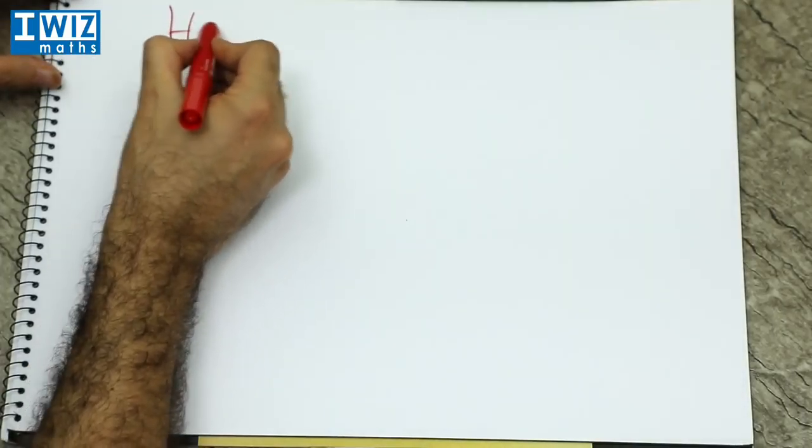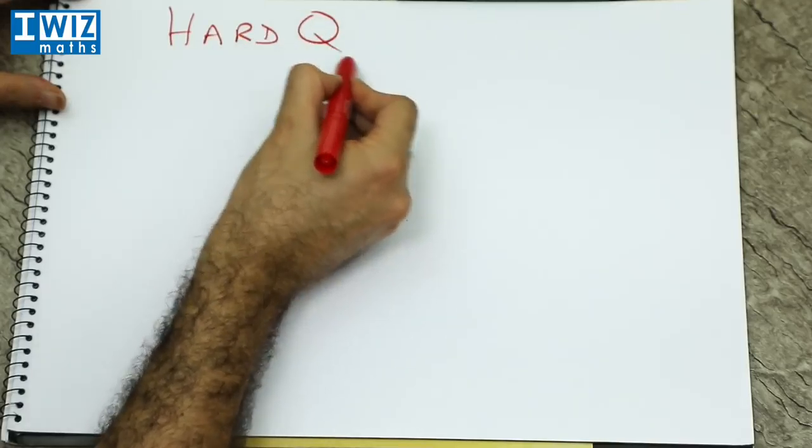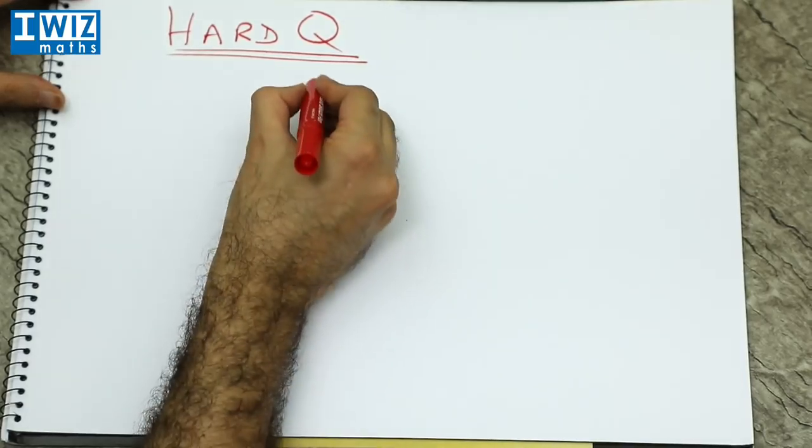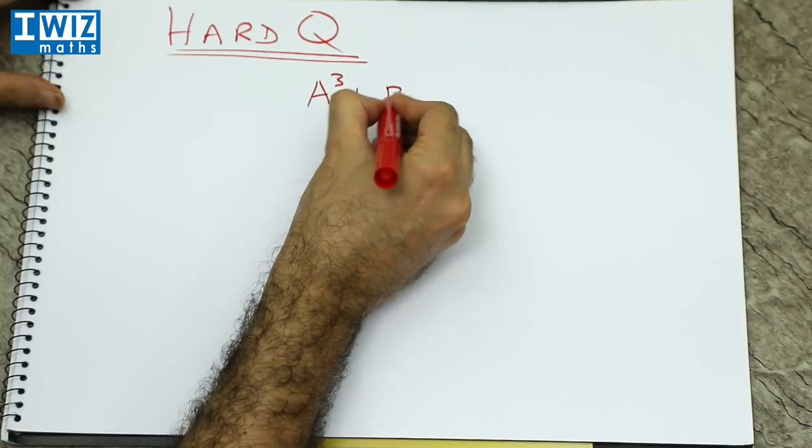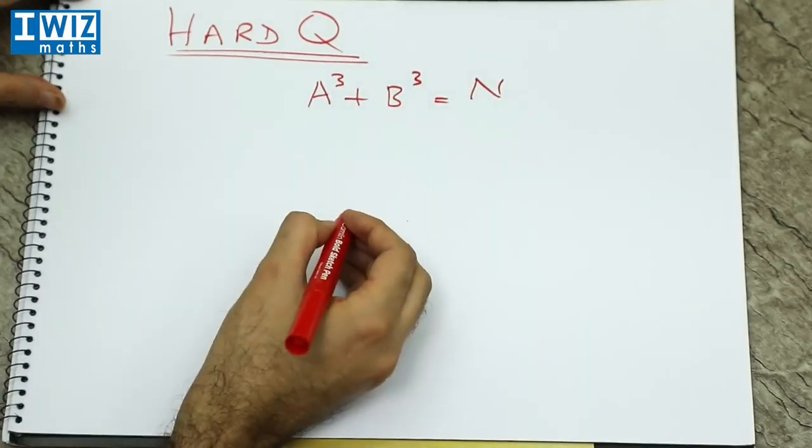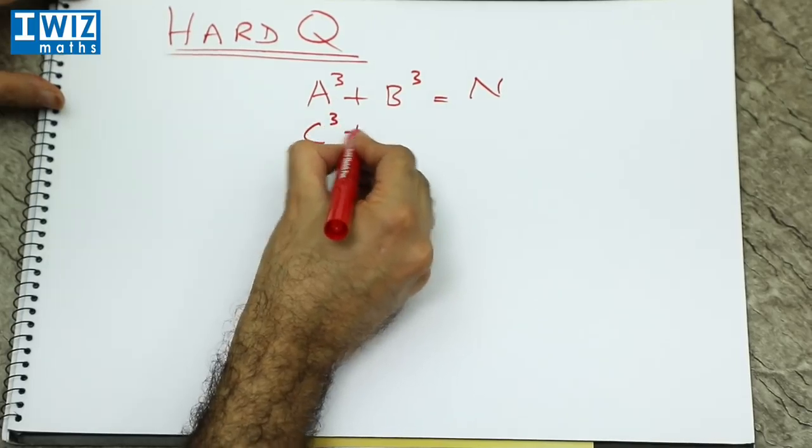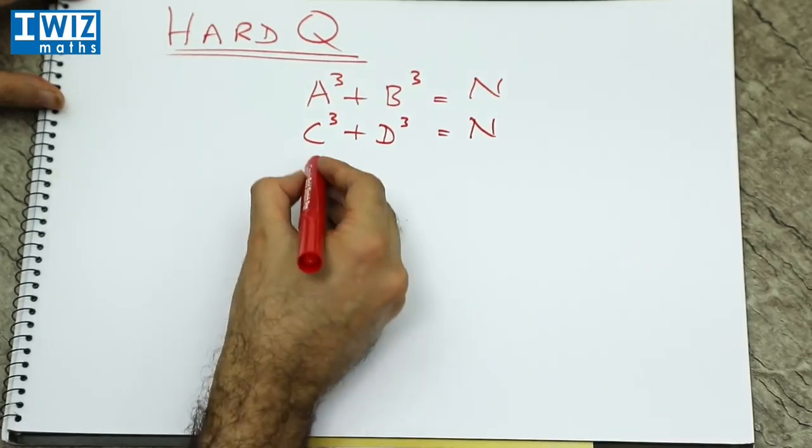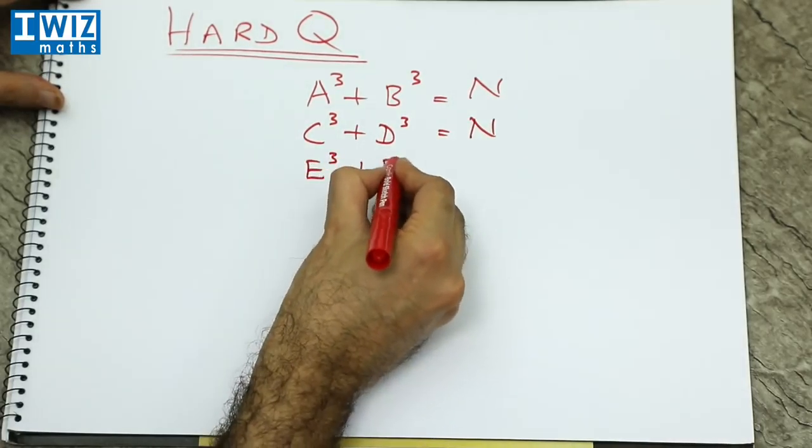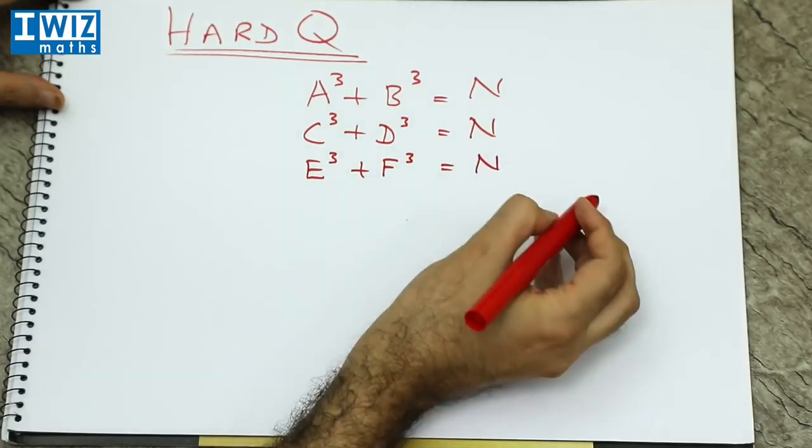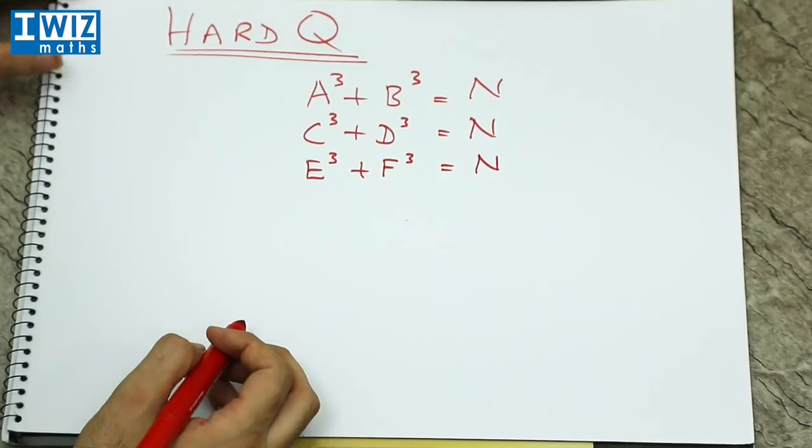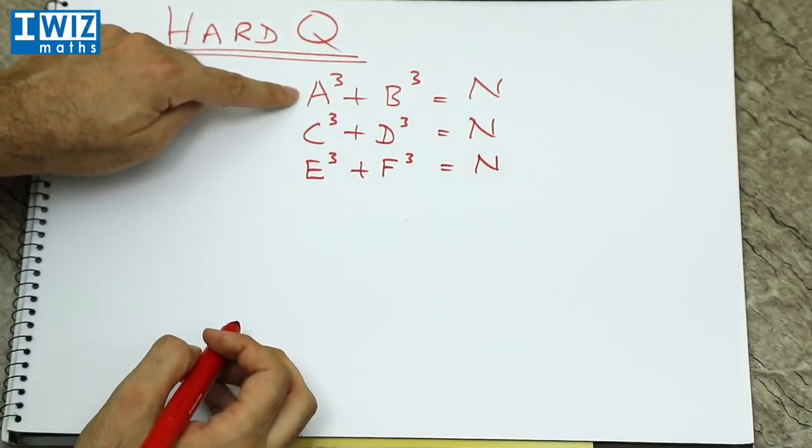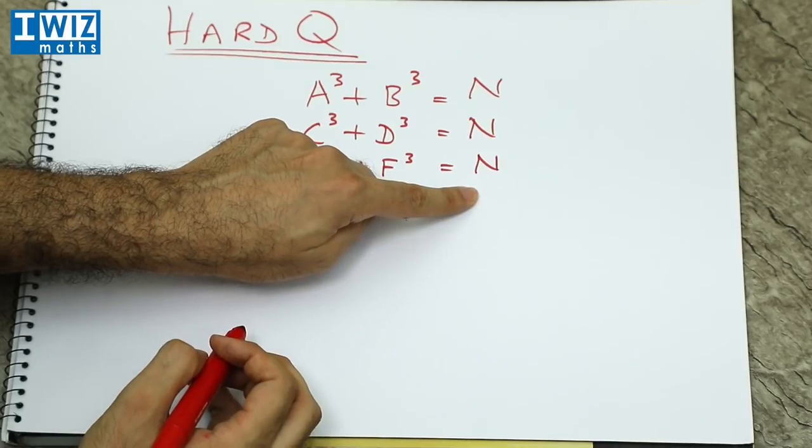Let's give a hard question. This is actually quite a hard question. And the question is the following: consider that we have A cubed plus B cubed equal to some number n and we have C cubed plus D cubed equal to the same number n. But now we also want E cubed plus F cubed equal to the same number n. So what you need to do is you need to find A, B, C, D, E and F such that when you cube them and add them up in the following way you get the same number n.